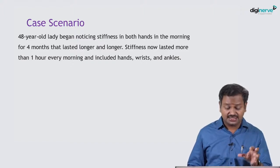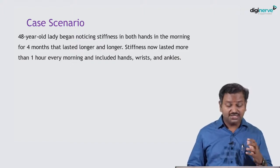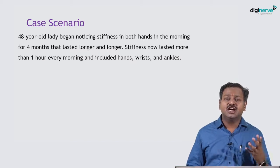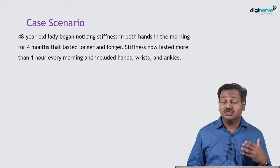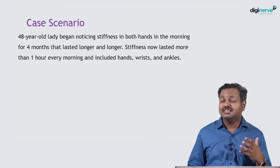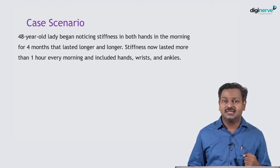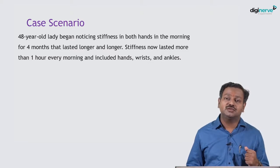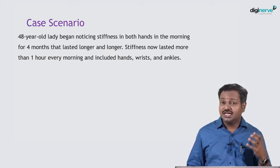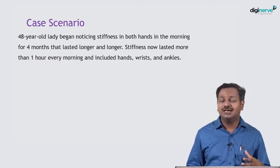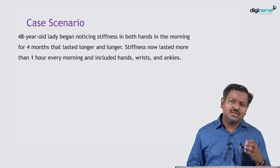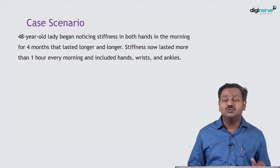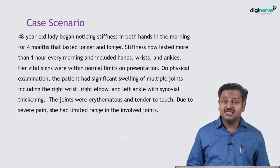Along with the arthritis there is stiffness. The key question is how long the stiffness lasts — here it lasts for more than an hour. This is classically a feature of synovitis, meaning inflammation of the synovium of the joint. Synovial inflammation and polyarthritis in a middle-aged female: the most common arthritis, especially when involving the hand joints, is rheumatoid arthritis.